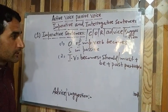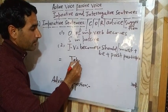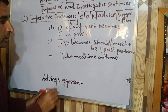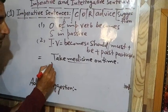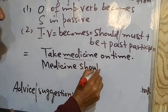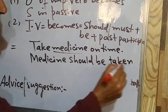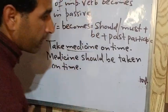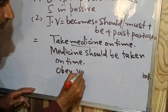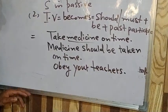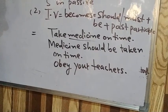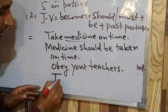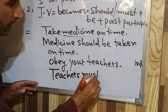Examples for advice or suggestion: 'Take medicine on time' — the object is 'medicine,' so the passive is 'Medicine should be taken on time.' Another example: 'Obey your teachers' — in passive this becomes 'Teachers must be obeyed' (using 'must' because it is stronger than 'should').